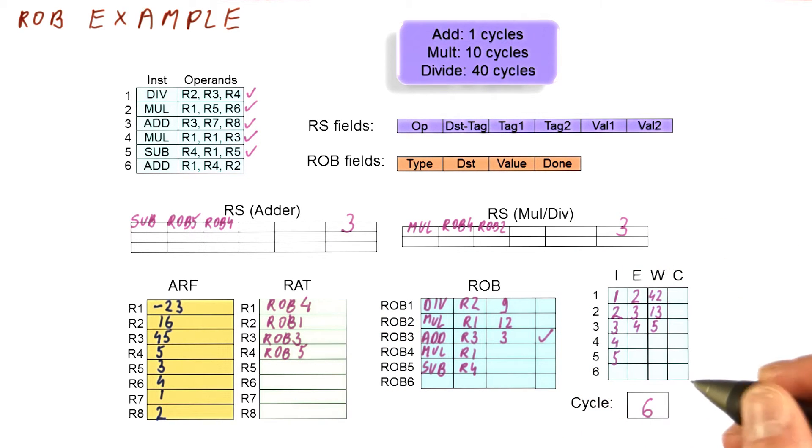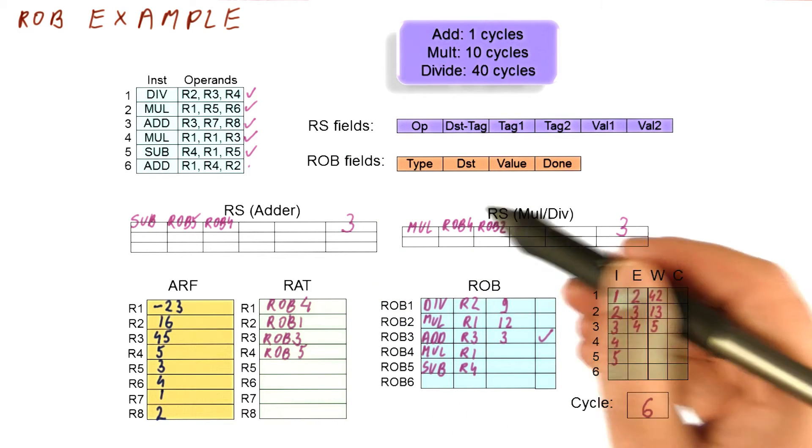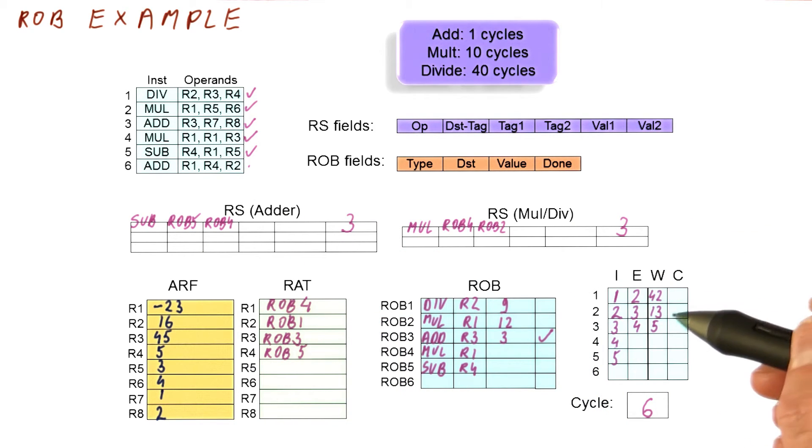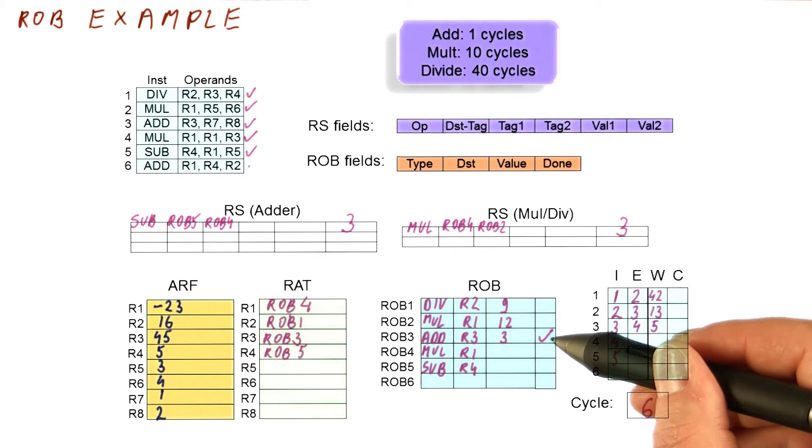So in cycle six, what happens is as far as issuing is concerned, we're going to try to issue this instruction. As far as execution is concerned, these two cannot still execute because they're still waiting for something. As far as writing of results is concerned, the instruction three has finished writing the result and has been marked as done.